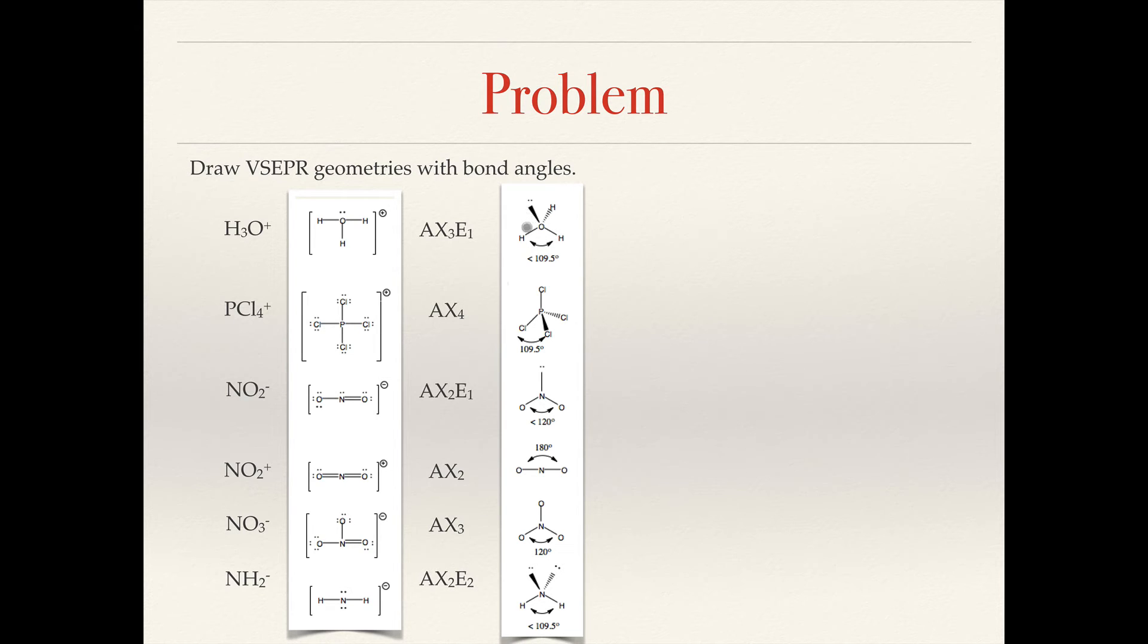But what we don't want you to do is provide this angle. We don't know where the lone pair is, so it's really not a good idea to label a bond angle that's a lone pair atom to atom. We want to stick to where the nuclei are in this molecule, and the nuclei, obviously, are in the center of these atoms.